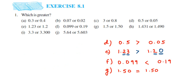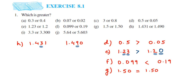The next question: 1.431 and 1.490. The whole part is 1 in both. The tenth place is 4 in both — cannot compare. Next, the hundredth place: here we have 3 and here we have 9. Nine is greater, which means 1.490 is greater than 1.431.